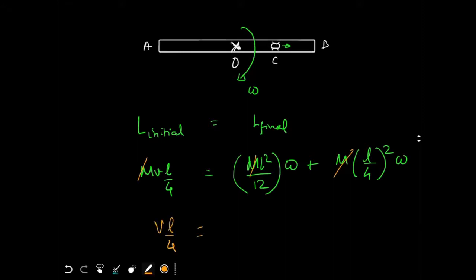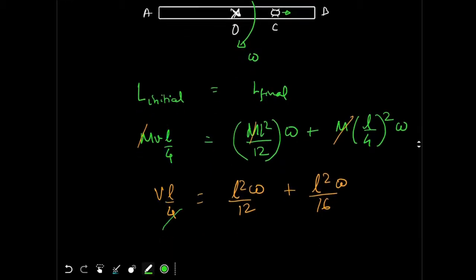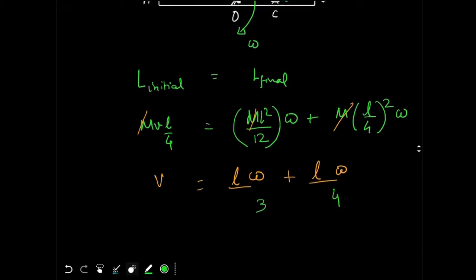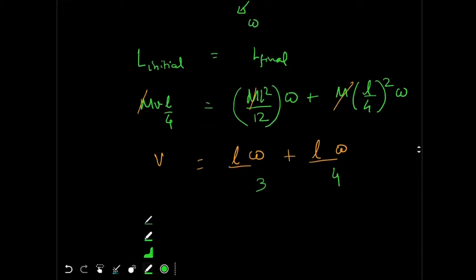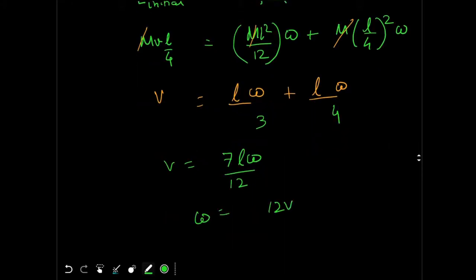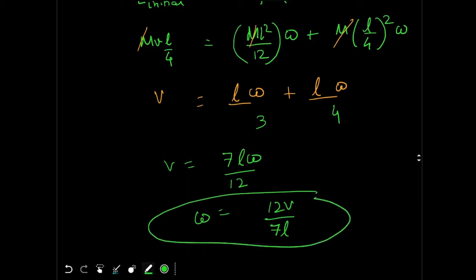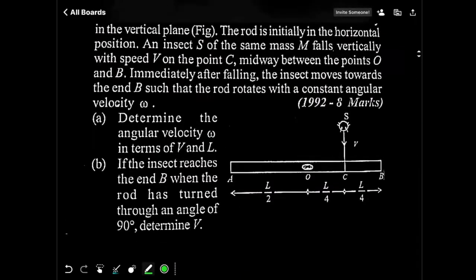So we get: V·(L/4) = (L²·ω/12) + (L²·ω/16). Simplifying: V = (L·ω/3) + (L·ω/4) = 7Lω/12. Therefore omega equals 12V divided by 7L. This is the answer to Part A, found simply by using angular momentum conservation.